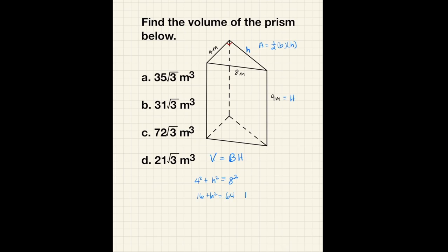We get h is equal to the square root of 64 minus 16 and we'll simplify that to be 4 times the square root of 3.